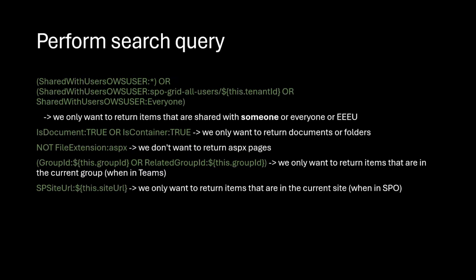The other two filters are for everyone except external users, or the everyone user. Then in filtering out what we want to get back, I want to get documents and folders — so that is IsDocument equals true or IsContainer equals true. We don't want to get .aspx pages back, so we're not interested in news pages or home pages. If we're in Teams, I also want to scope the query down to get documents from the current group ID and related group IDs — that covers private channels. If we're only in SharePoint, I filter only on the current site using the site URL.